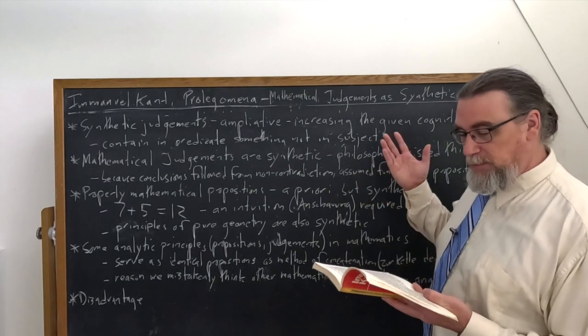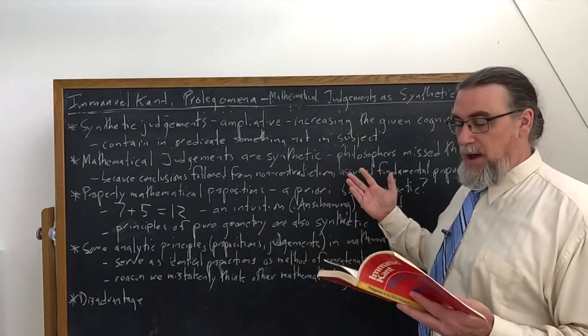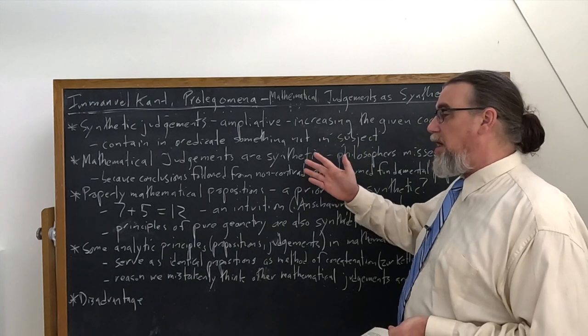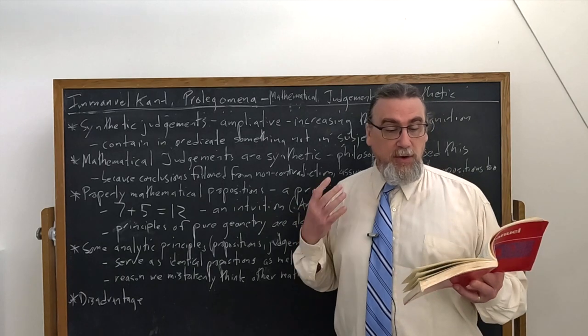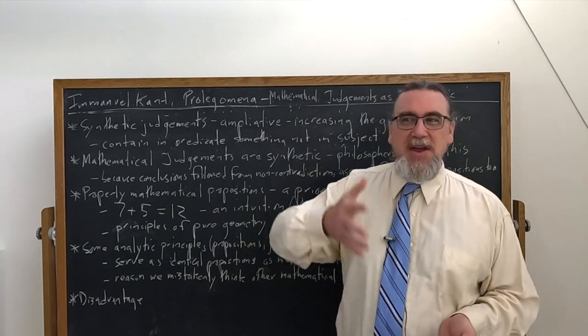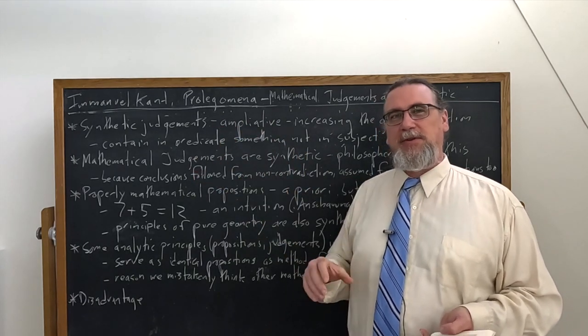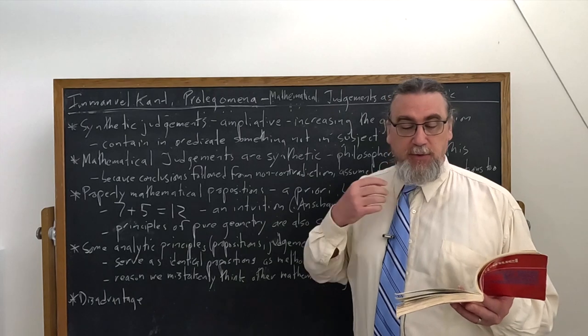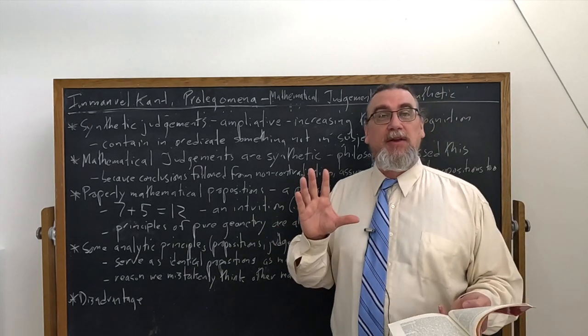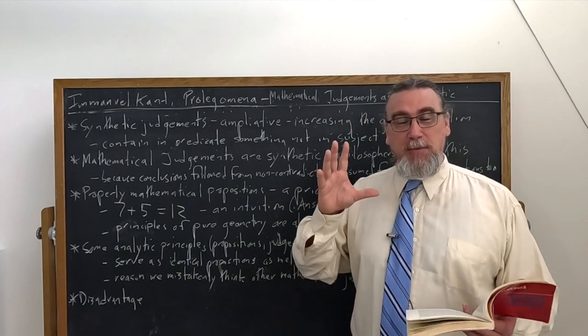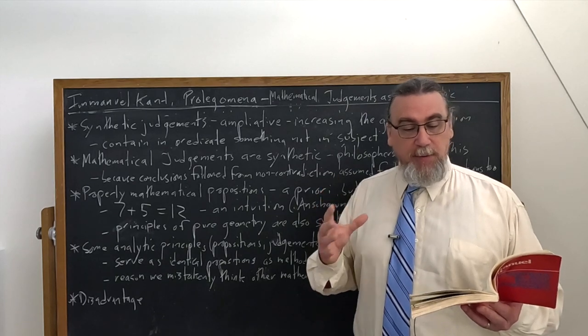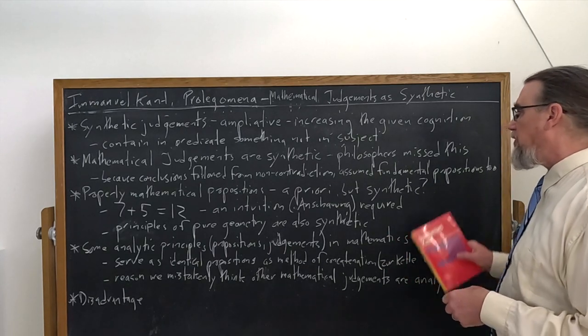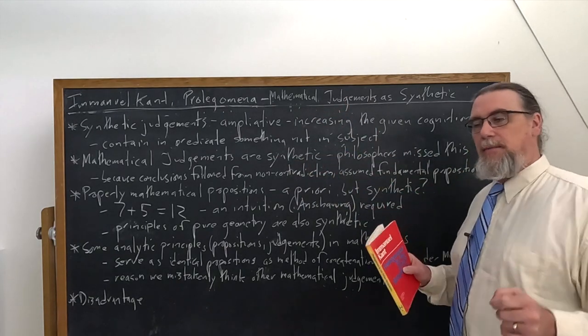And why did they do this? He tells us it's because they got mixed up about some key matters having to do with what we call the law or the proposition of contradiction or non-contradiction. So what is this? A thing cannot be and not be in the same way at the same time with a bunch of different provisos. He says it was found that the conclusions of mathematicians proceed according to the principle of contradiction. You need that because he says you want to have apodictic certainty, certainty that you can be absolutely sure about. And so people persuaded themselves that the fundamental propositions, the grundsatz, the things that we build mathematics out of, that they also followed from non-contradiction, which is not in fact the case.